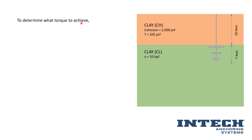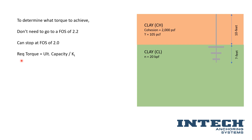Now that we know what lead section to use, we can determine what torque will be required to achieve that capacity. We don't need to go to a factor of safety of 2.2 — that's overkill. Since these are performance-based specifications, we can stop at a factor of safety of 2. The required torque equals the ultimate capacity divided by the shaft-specific torque correlation factor K sub T. We can substitute that as our design load times 2.0 for our factor of safety, giving us the ultimate resistance we want to achieve, divided by our shaft-specific torque correlation factor.